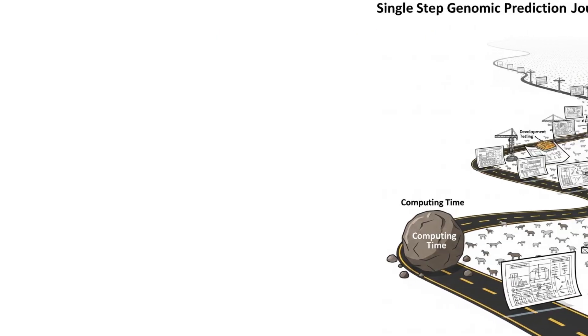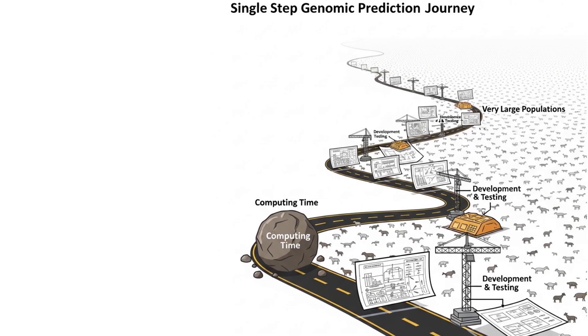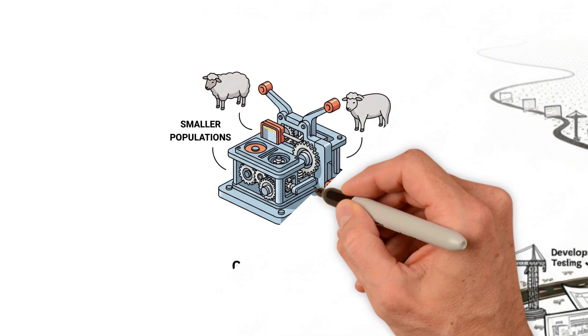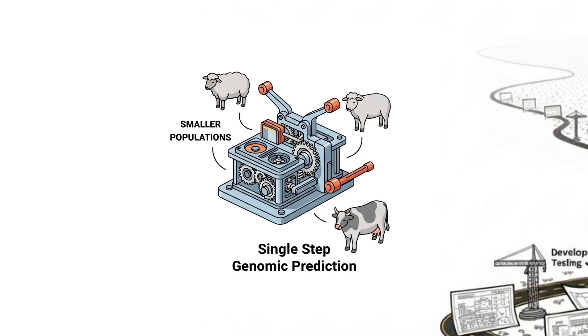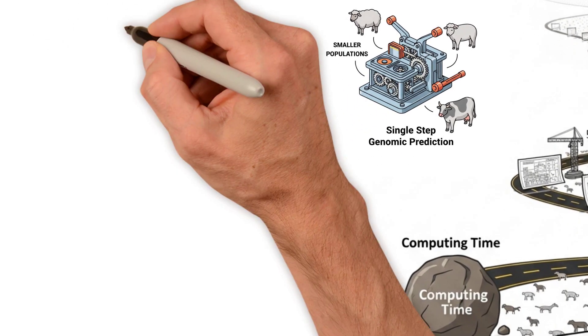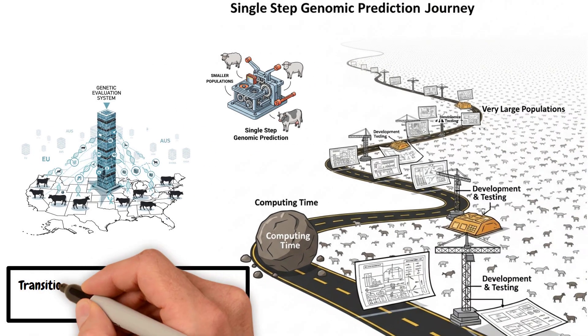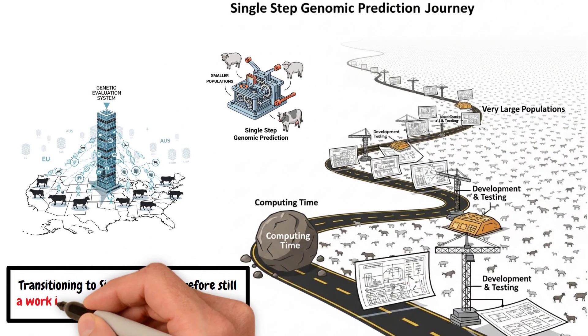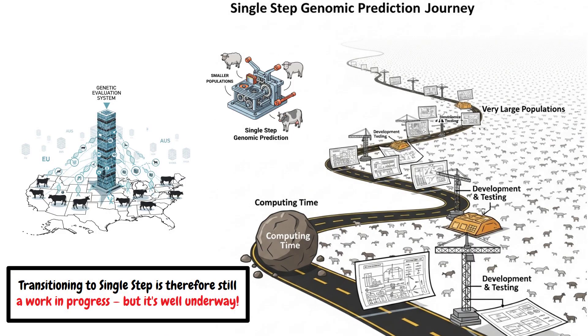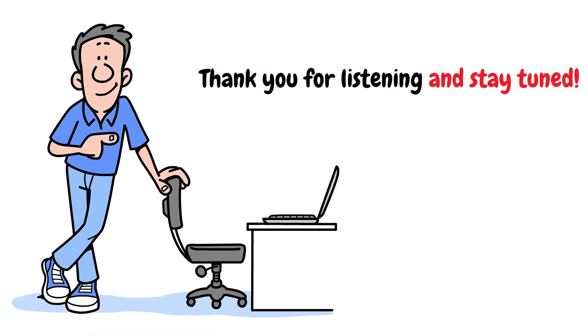2. Single-step gets quite complicated with longer computing time for very large populations, and it takes a long time of development and testing. This is why it has been implemented in smaller populations. The United States, however, has the largest genetic evaluation system in the world. Transitioning to single-step is therefore still a work in progress, but it's well underway. Thank you for listening, and stay tuned.